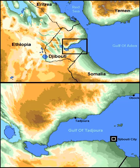The limits of the Gulf of Tajura are as follows: on the east, the western limit of the Gulf of Aden; on the west, the meridian of Gubat-el-Karab.